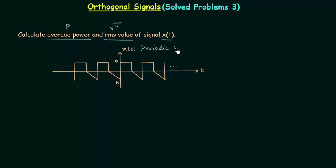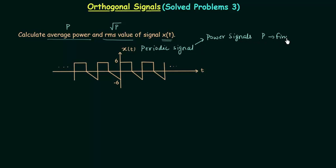Since x(t) is a periodic signal, we already know that periodic signals are power signals. For power signals, the average power P is finite, and the total energy E is infinity.